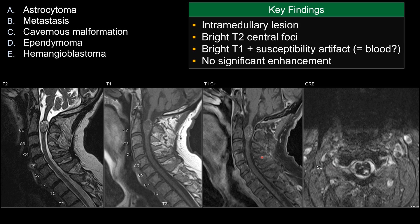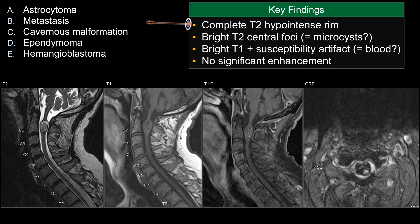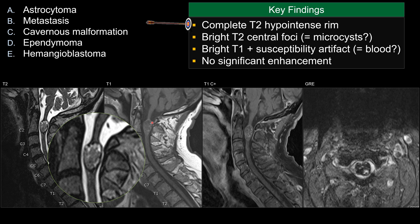On post-contrast T1, there may be a little bit of enhancement — minimal enhancement centrally — but most of this bright signal is coming from the bright lesion before contrast. So in general, the lesion does not enhance. Another key feature visible on T2-weighted sequence is this complete T2 hypointense rim surrounding the lesion.